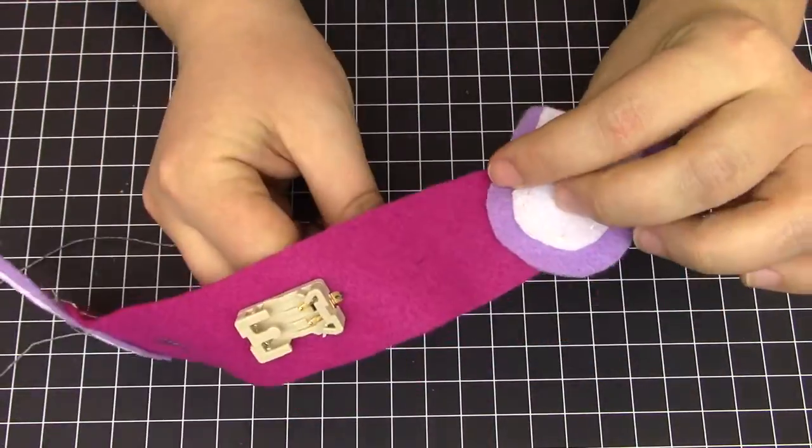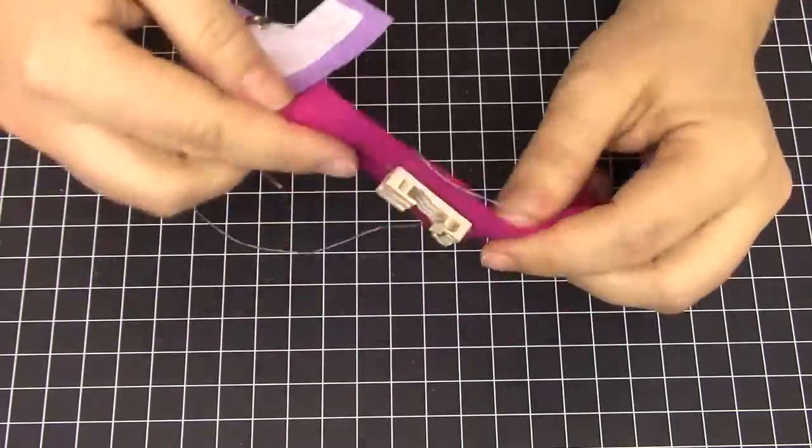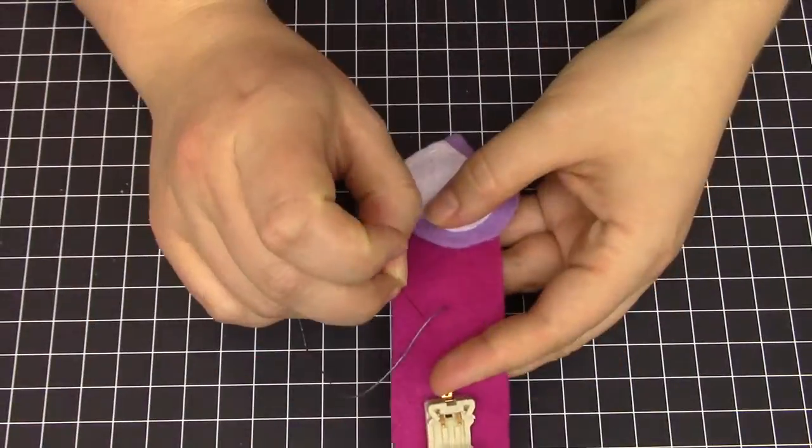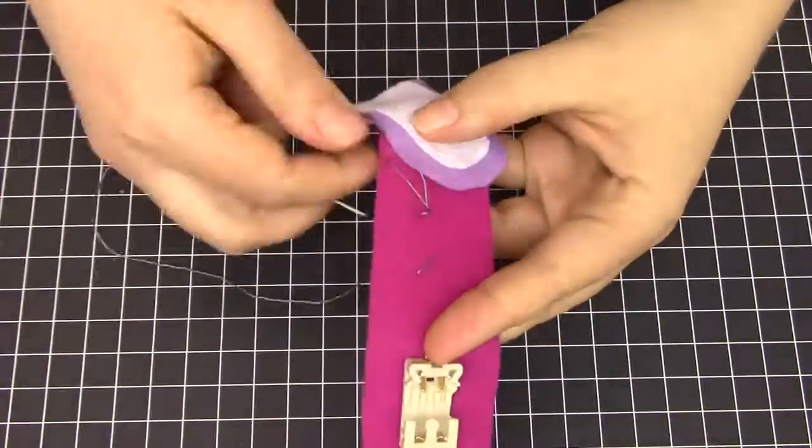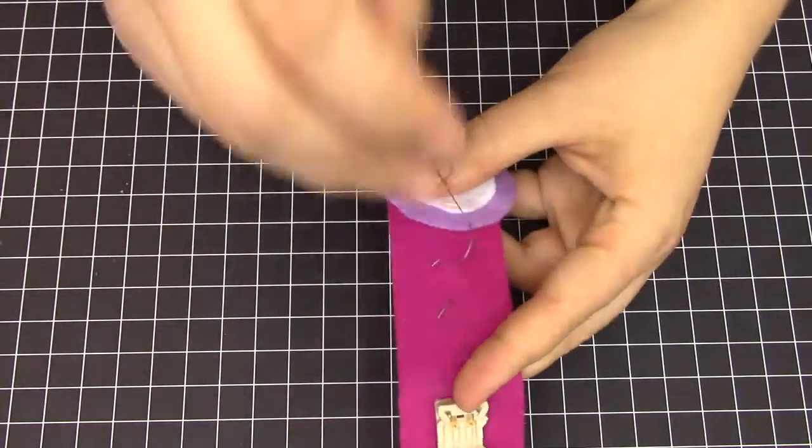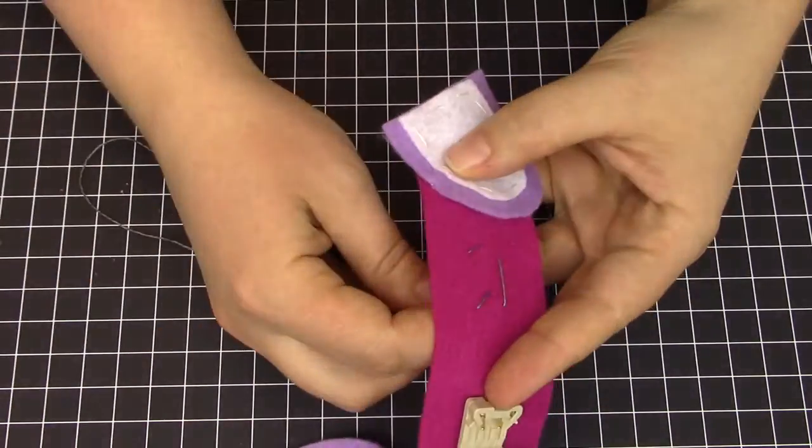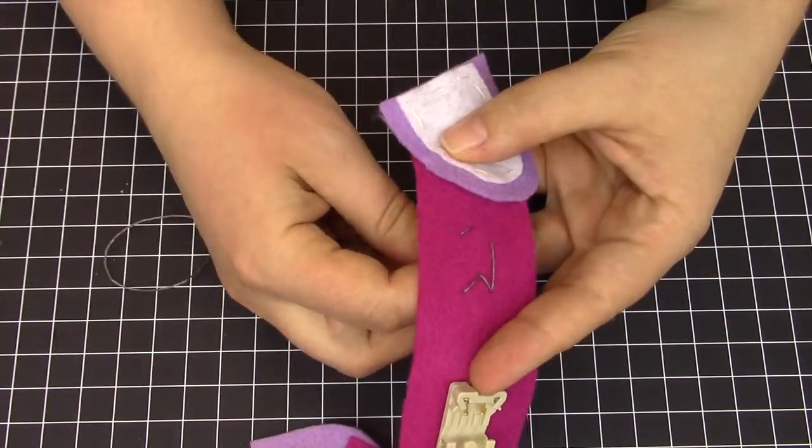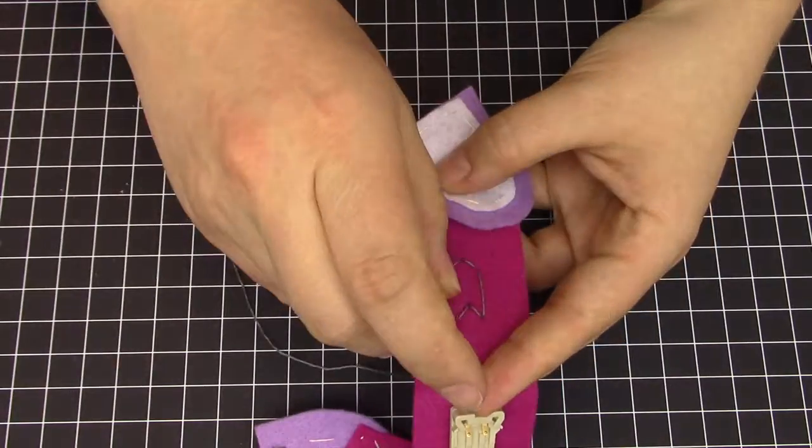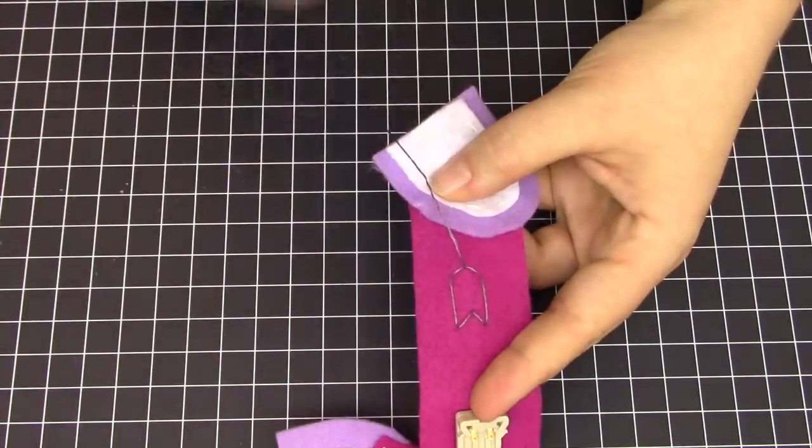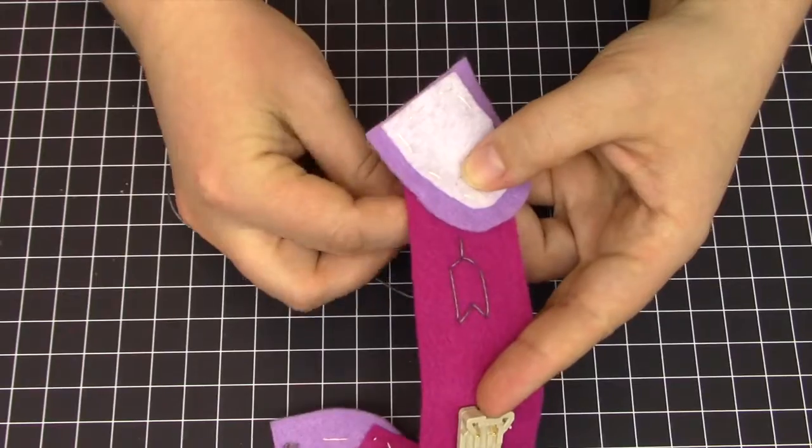Get a new length of conductive thread, and attach the other battery terminal. Then make large stitches out to the heart. If you like, you can create the fletching on our arrow that's piercing the heart using the conductive thread. But this is purely decorative. The choice is up to you. Again, once you reach the end, do not tie off the conductive thread quite yet.